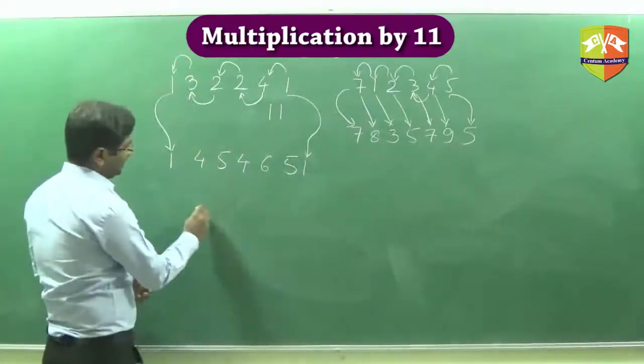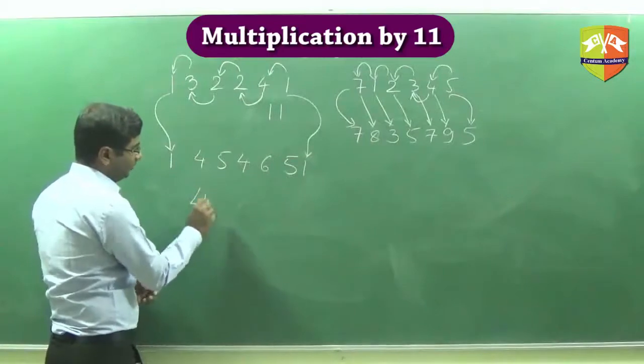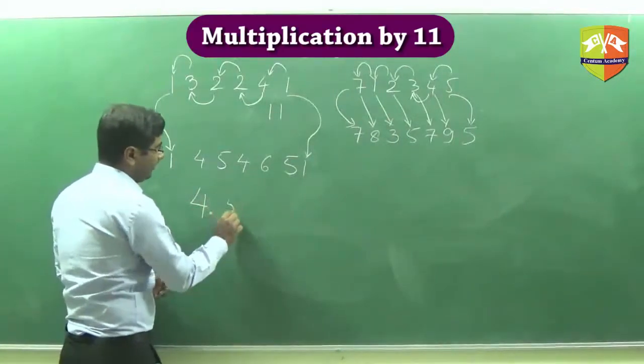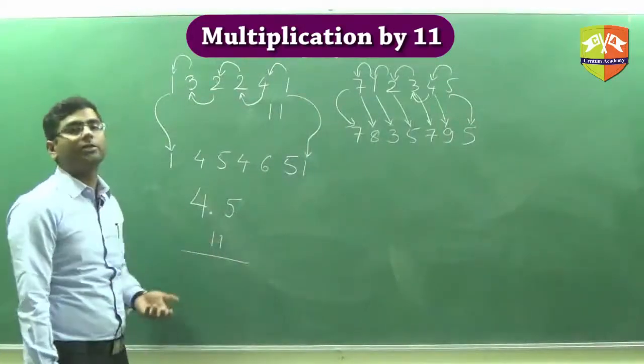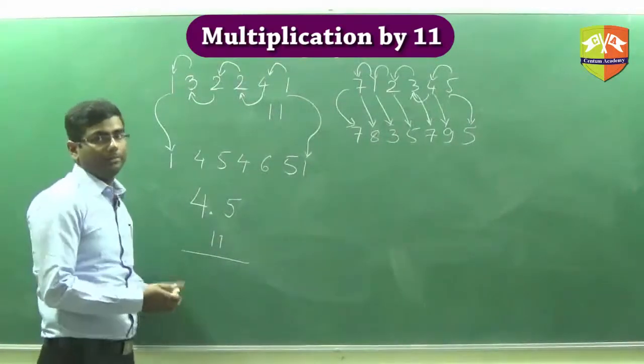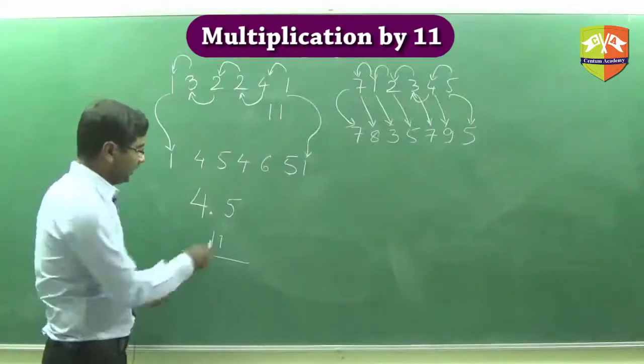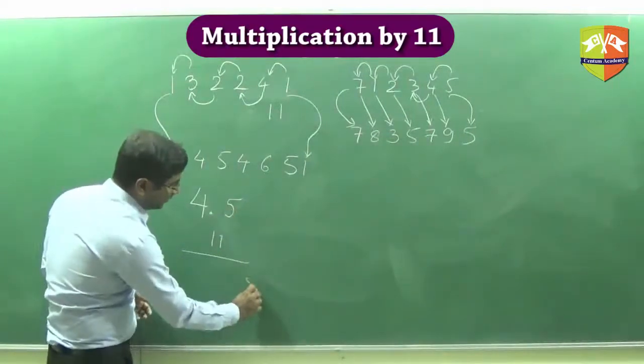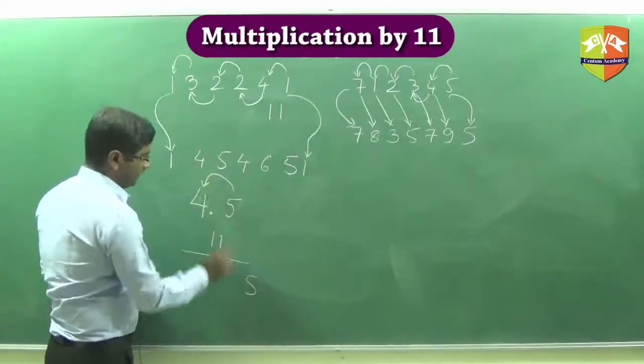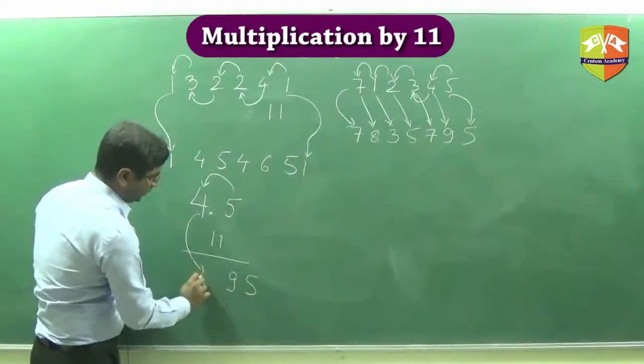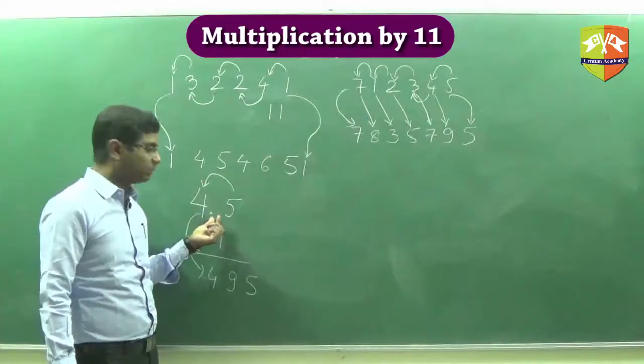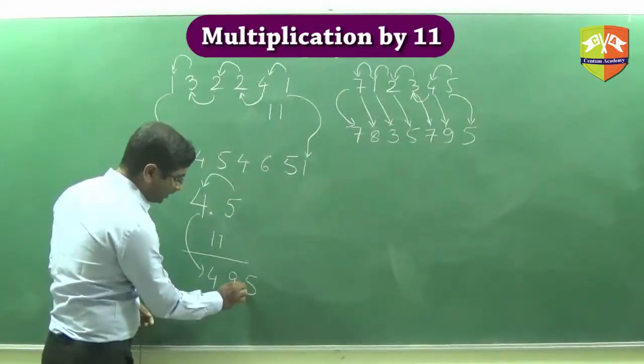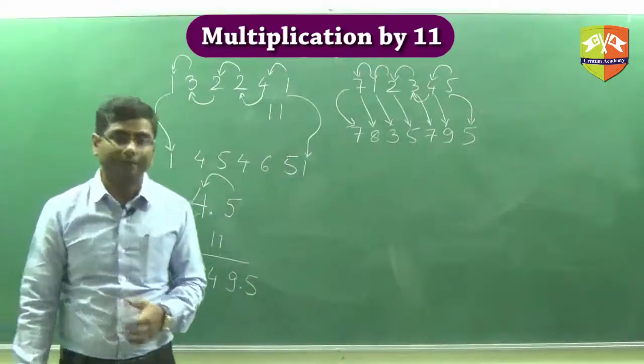Let's say you had the same initial number, instead of 45 you had 4.5 and you had to multiply this by 11. You ignore the decimal and do the calculation normally. 5 comes here then 5 plus 4 is 9 and then this 4 comes here. Let us count how many places after decimal. It is 1. So here also it will be 1 and hence the answer is 49.5.